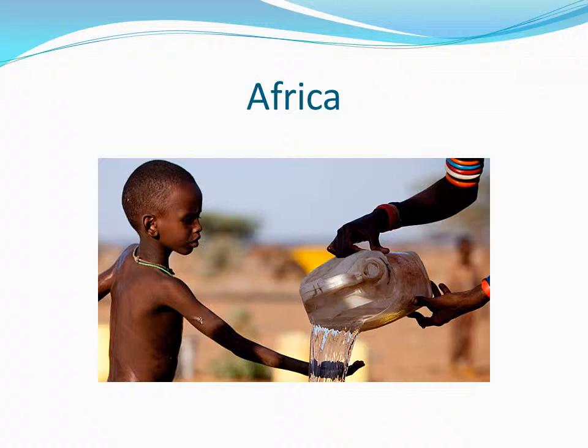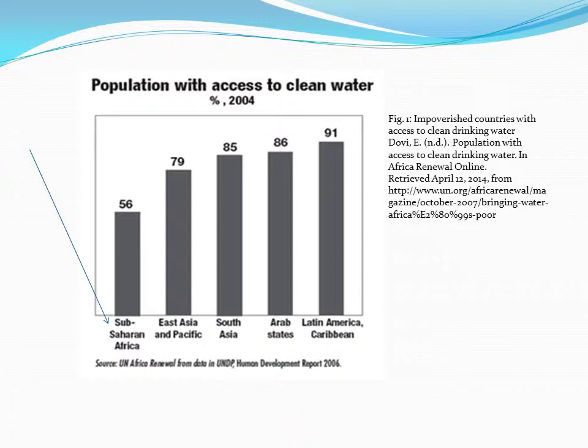Perhaps the most nationally recognized example of environmental injustice is the issues that exist in Africa. A study conducted in 2004, shown in Figure 1, published in 2006, shows that as of 2004, only 56% of people in sub-Saharan African countries had access to clean and drinkable water. It is clear from this graph that areas of Africa are the ones hit the hardest by issues of not being able to gain access to clean water, which is linked to the intense poverty that exists in these regions.